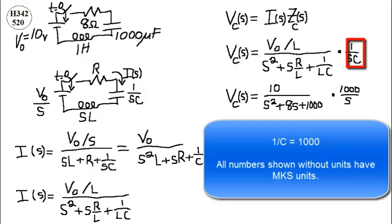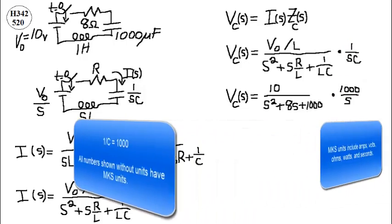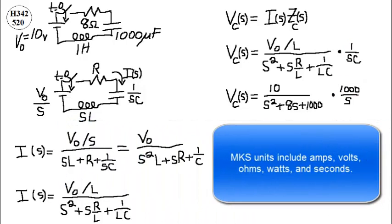1 over C is 1000. All numbers shown without units have MKS units. MKS units include amps, volts, ohms, watts, and seconds.